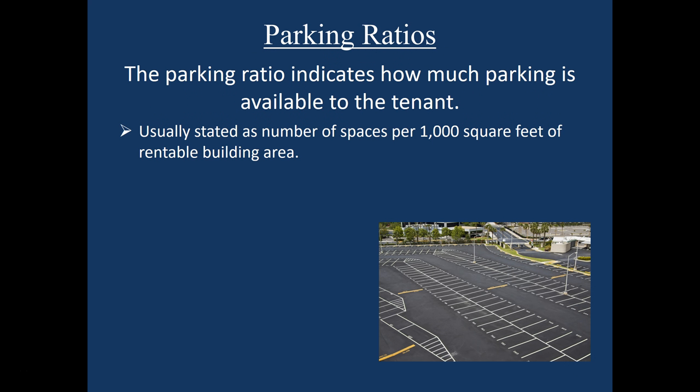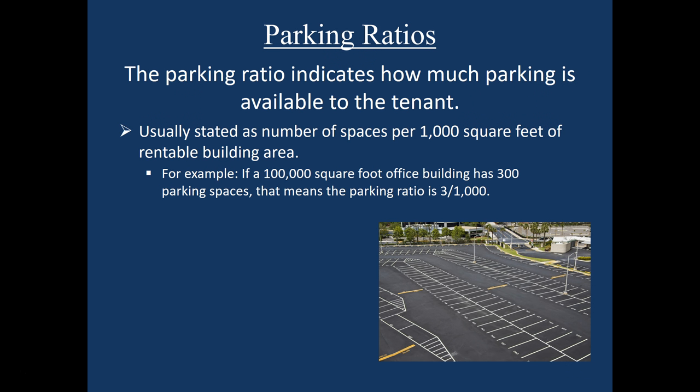Here's an example of how it's calculated. Let's say an office building is 100,000 square feet and has 300 parking spaces. That means the parking ratio is 3 per thousand, because it has 3 spaces for every 1,000 square feet of building area.